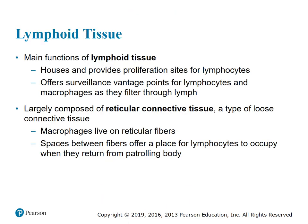Main functions of lymphoid tissue: one, it houses and provides proliferation sites for the lymphocytes; and two, it offers surveillance vantage points for lymphocytes and macrophages as they filter through the lymph. Lymphoid tissue is largely composed of reticular connective tissue, which is a type of loose connective tissue, and the macrophages live on the reticular fibers. It also has spaces between the fibers that offer a place for lymphocytes to occupy when they return from patrolling the body.